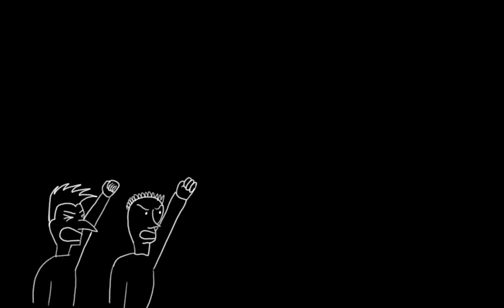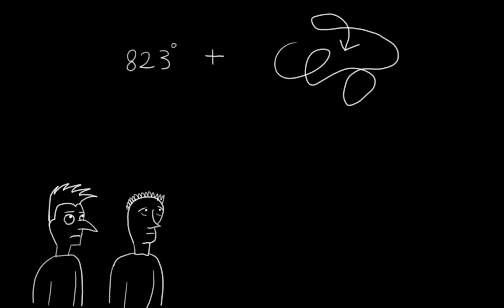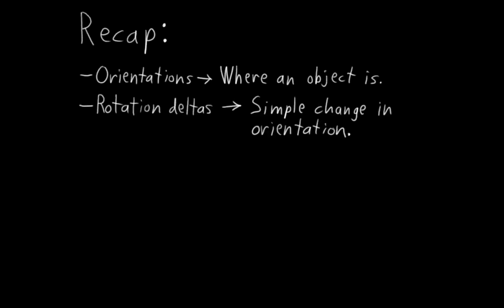When animators and riggers want the number of revolutions of a full 3D rotation preserved, they're actually asking the impossible. You have to preserve the entire path of rotation, not just the amount that it rotated. Although, and I'll get to this later, there are some cases where you can preserve revolutions for animation and rigging, although they all rely on predefined rotation paths to a greater or lesser extent. But for 3D rotations in general, it's not always possible. So to recap, orientations are where an object is, rotation deltas are a simple difference or change in orientation, and rotation paths are a full recorded path of how an object rotated to where it is.